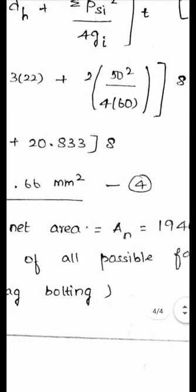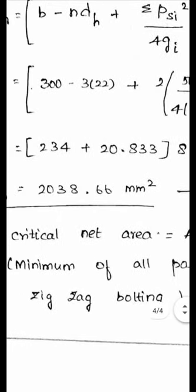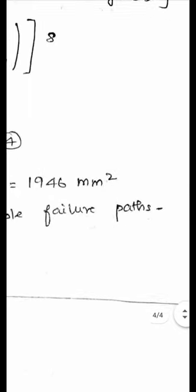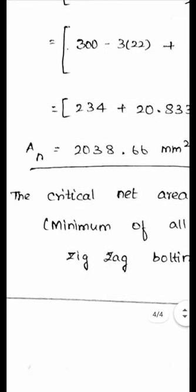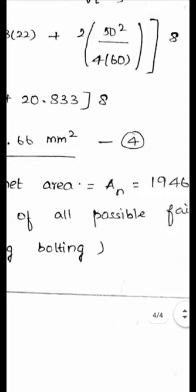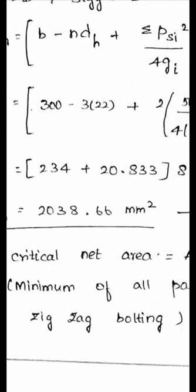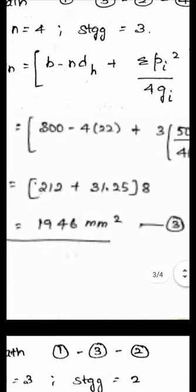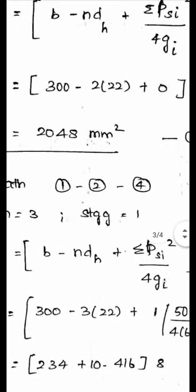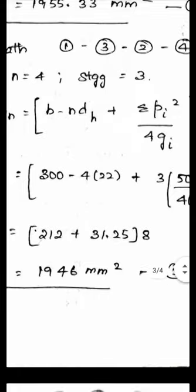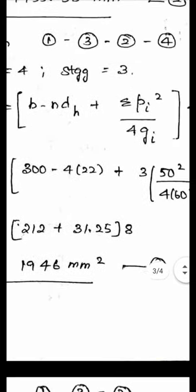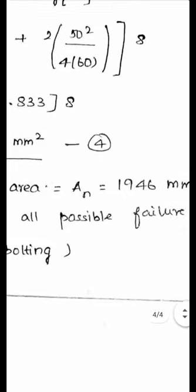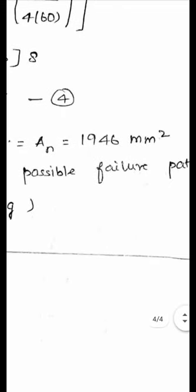For all four cases, I have calculated the net area An. The minimum value among all possible failure paths will be the critical net area. The least among the four values — 2038.66, 1946, 1955.33, and 2048 — is 1946 mm², through path 1-3-2-4. That will be your answer for the minimum net area. By following this procedure, we calculate the net area.